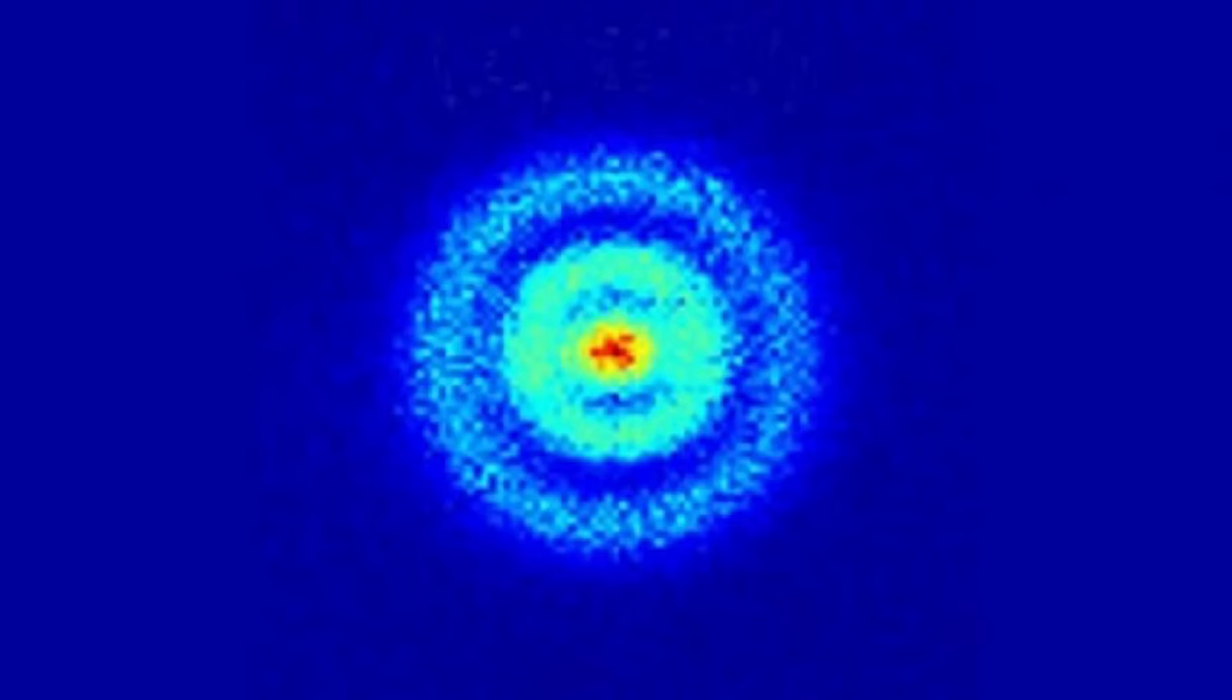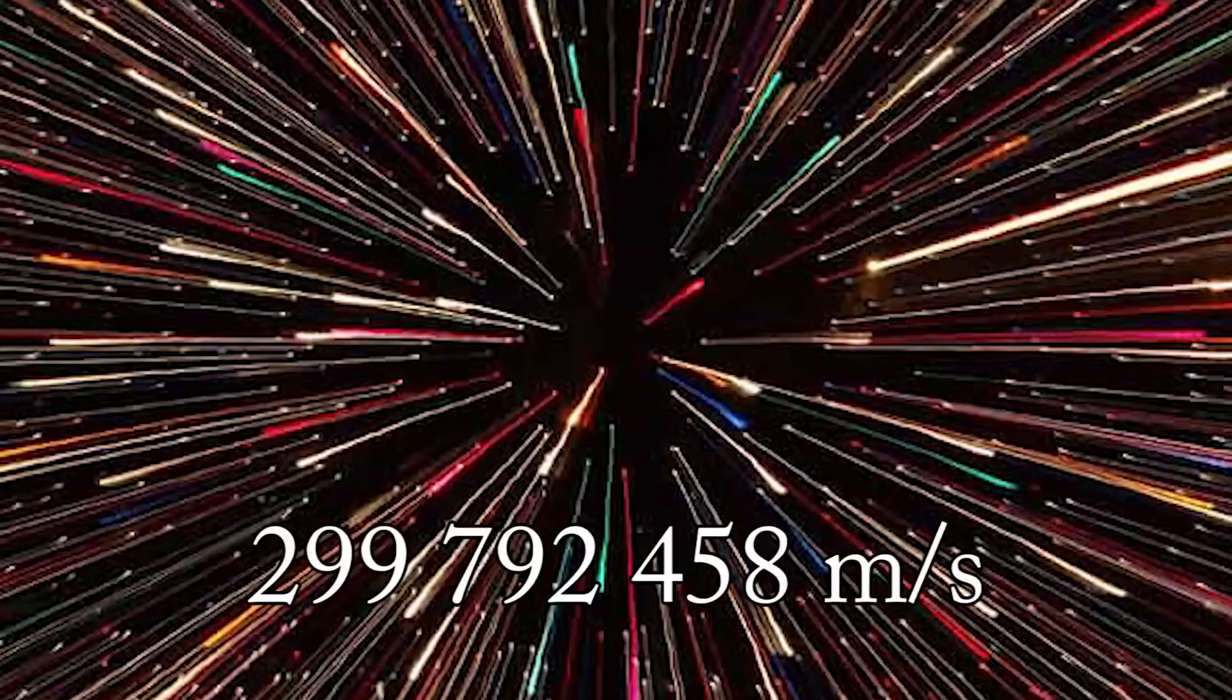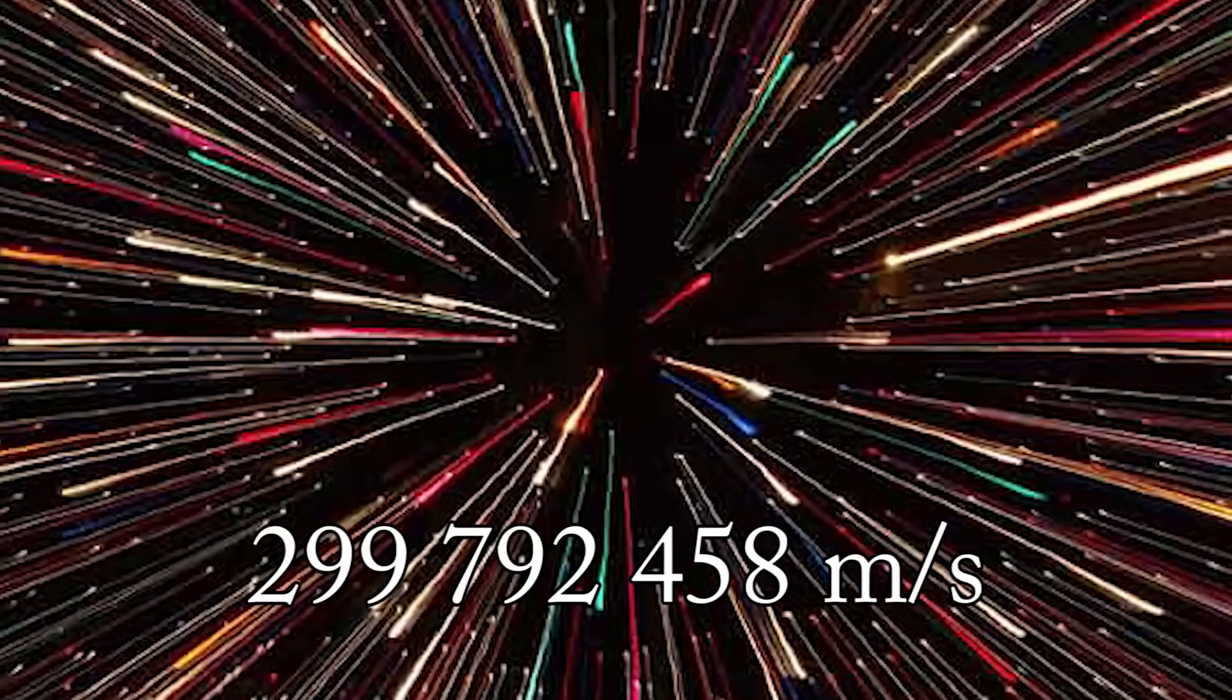Why do electrons have the mass and charge they do? Why is the speed of light exactly this constant? Could it have been different?